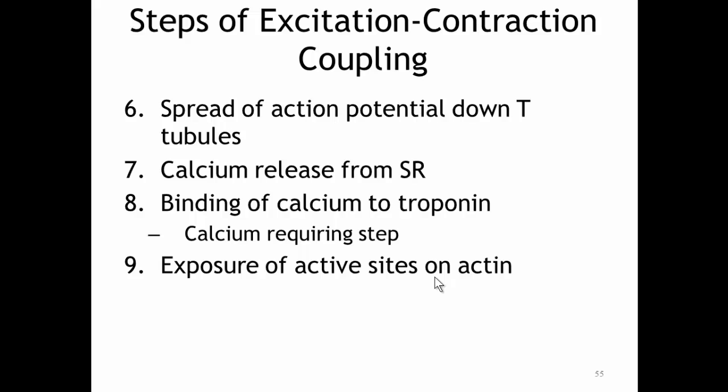So these are the four steps in excitation-contraction coupling, continuing off of our previous numbering system. Step six is the spread of the action potential down the T-tubules. Seven is the calcium release from the sarcoplasmic reticulum. Eight is the binding of calcium to troponin. And nine is the exposure of active sites on actin. Let's take a look at each of these in a little bit more detail.